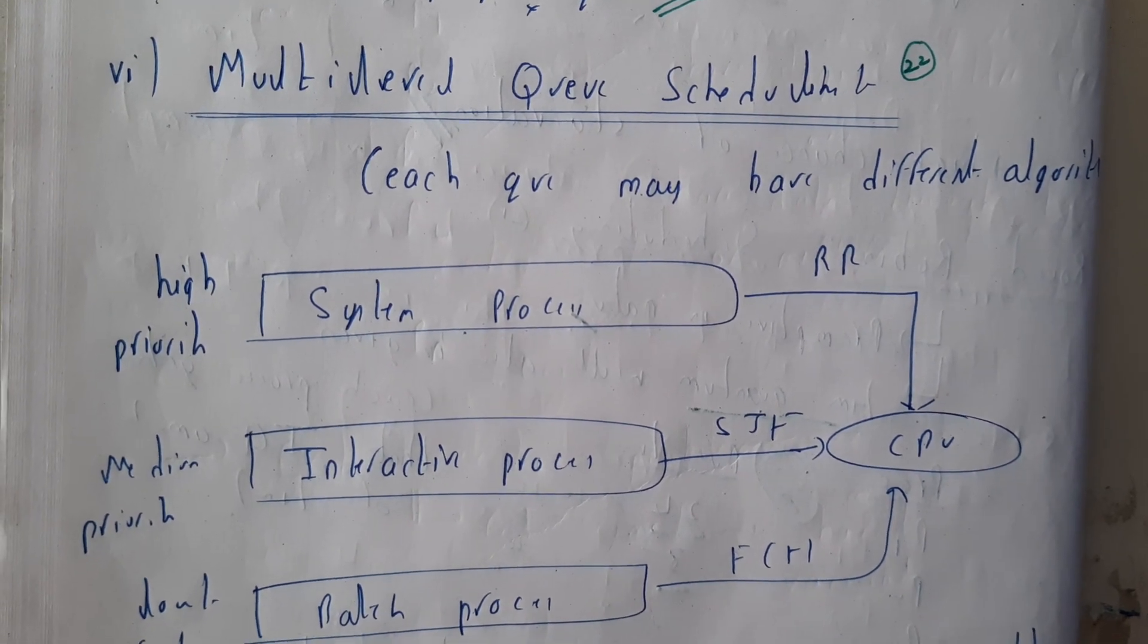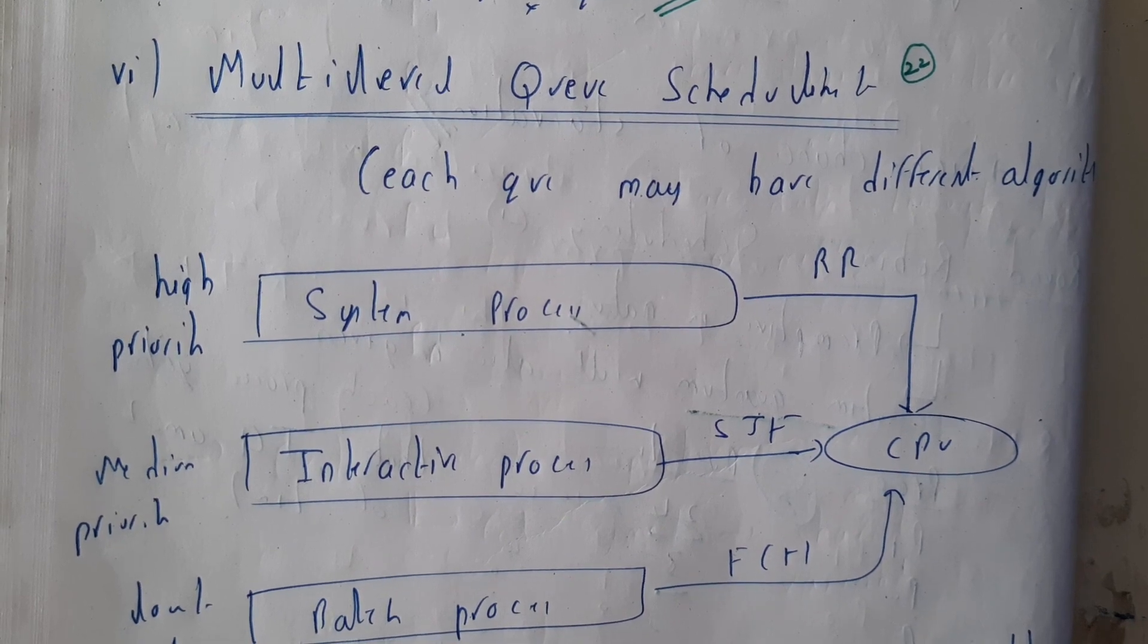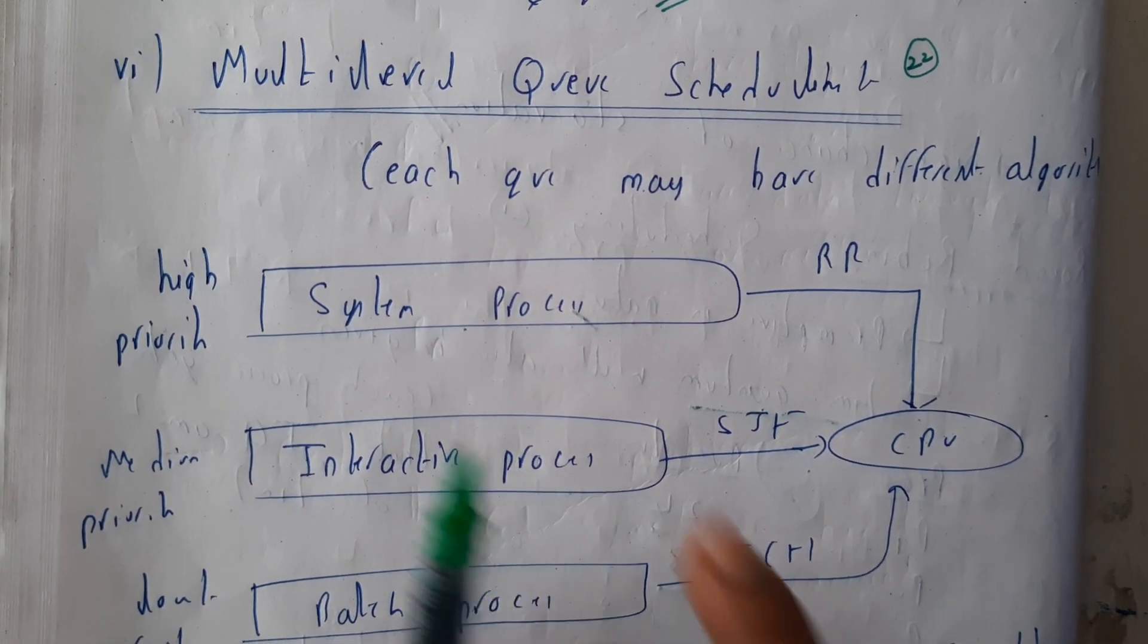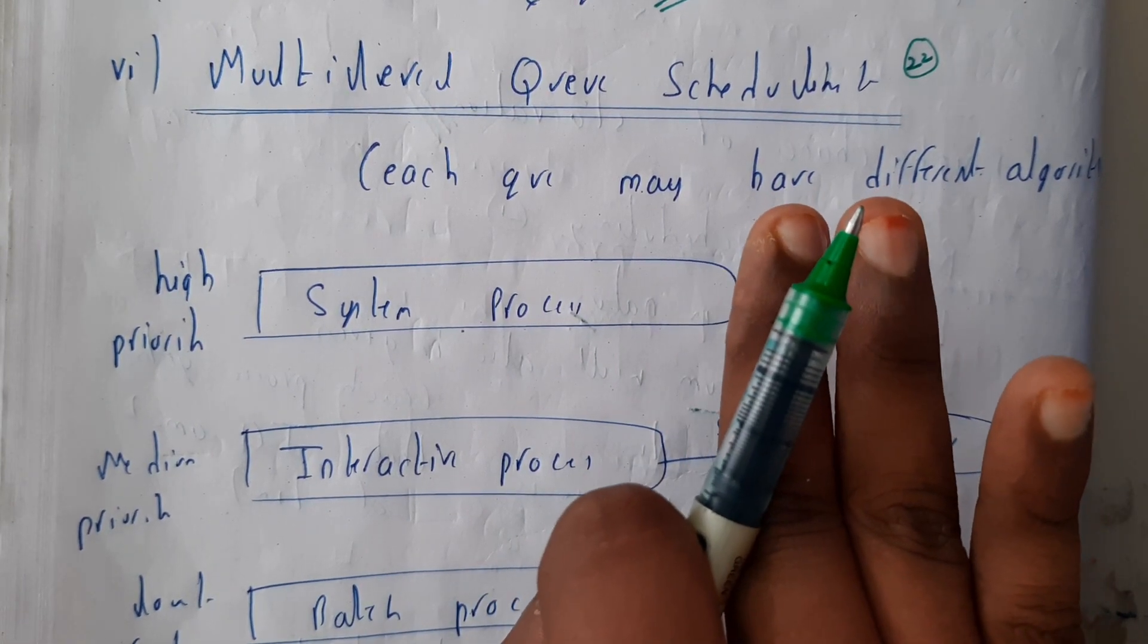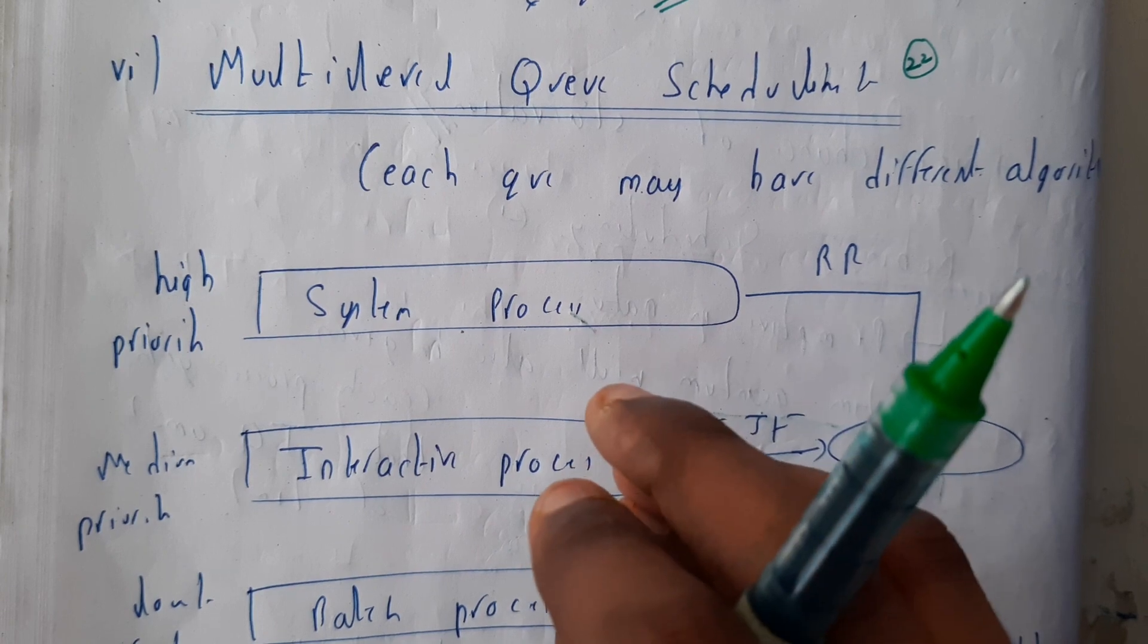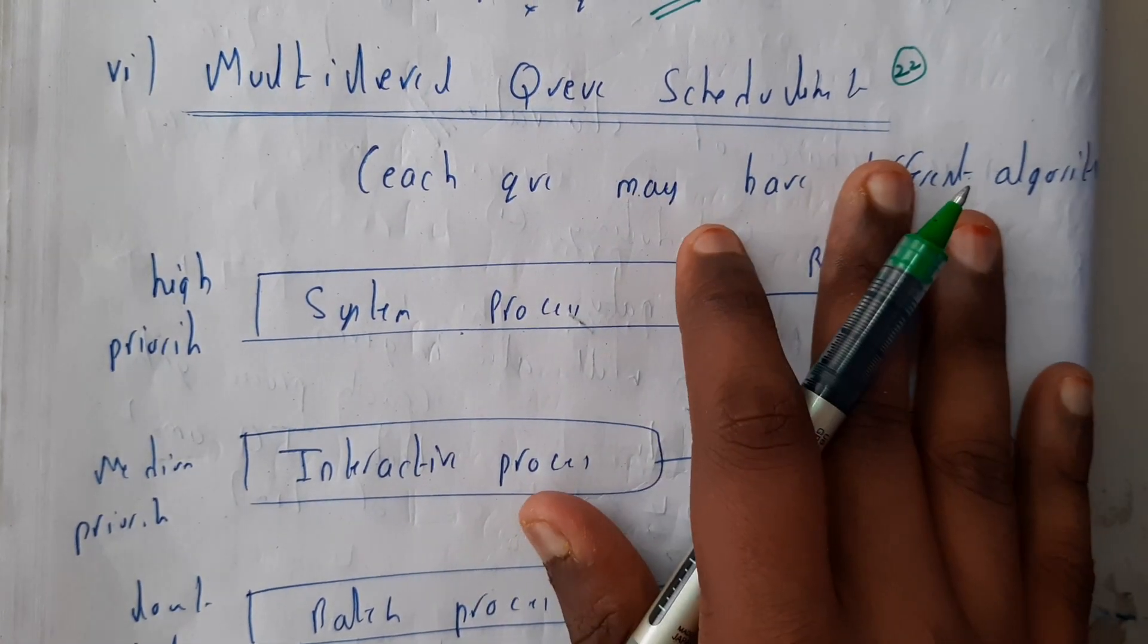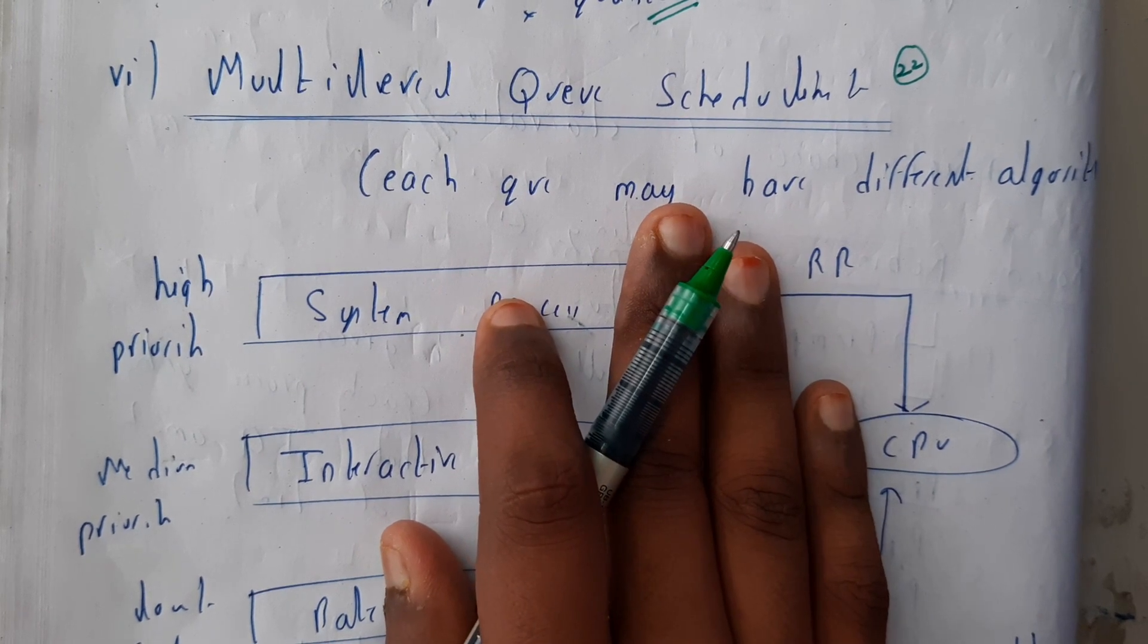Hello guys, we are back with our next tutorial. In this tutorial, let us go through multilevel queue scheduling. Till now we've gone through FCFS, SJF, shortest remaining time first, round robin, and priority. So we have gone through five different types of schedulings on which problems can be asked, basically on this multilevel queue and multilevel feedback queue.